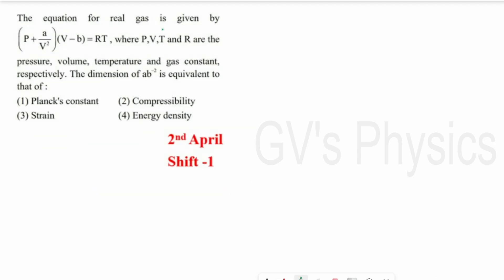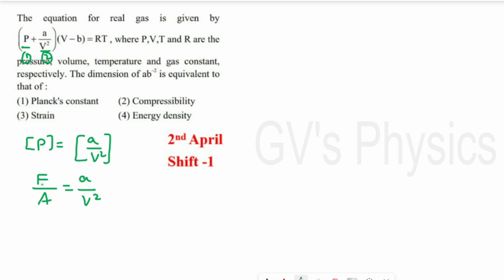Next question: The equation for a real gas is given where p is pressure, v is volume, and t is temperature. We need to find the dimension of a·b⁻². First, find dimensions of constants a and b. All terms in the equation must have the same dimension, so the dimension of pressure equals the dimension of a/v². Using pressure = force/area, we substitute: (M·L·T⁻²)/L² = a/L⁶, giving a = M·L⁵·T⁻².